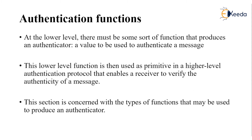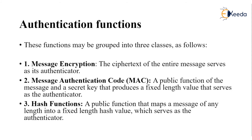These authentication functions may be grouped into three broad classes. The first one is message encryption — the ciphertext of the entire message serves as an authenticator. The second is message authentication code (MAC) — a public function of the message and a secret key that produces a fixed length value serving as the authenticator. The third is hash function — a public function that maps a message of any length into a fixed length hash value which serves as the authenticator.